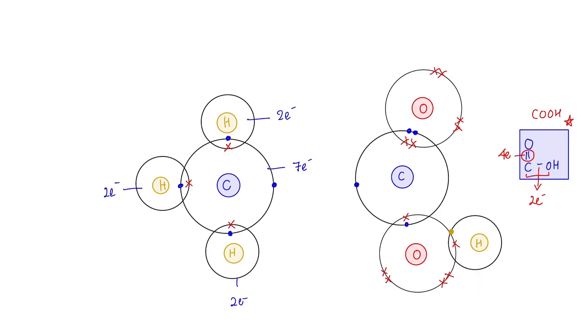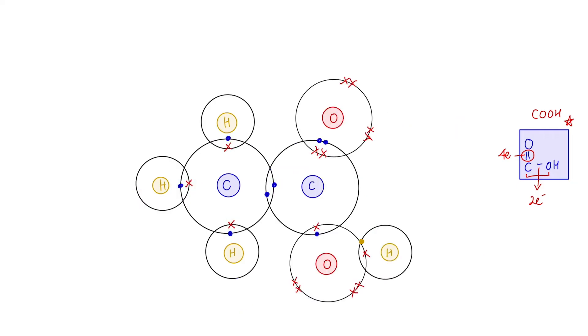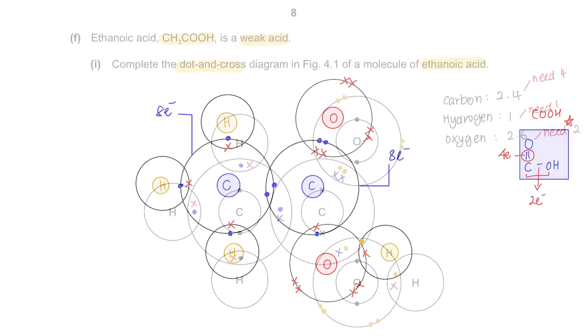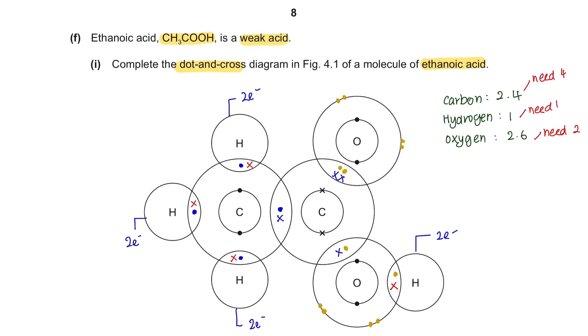We're done. And lastly, we can combine the two carbons with each other. Since both of these carbons have seven electrons on their outermost shell, they both require one electron more to become stable. And now both the carbons are complete with eight electrons. Make sure that each hydrogen atom has a complete outermost shell of two electrons, and carbon and oxygen also have a complete of eight electrons.